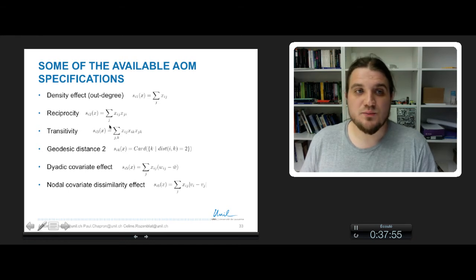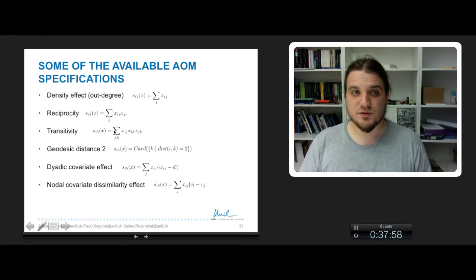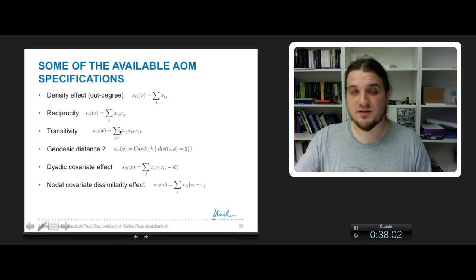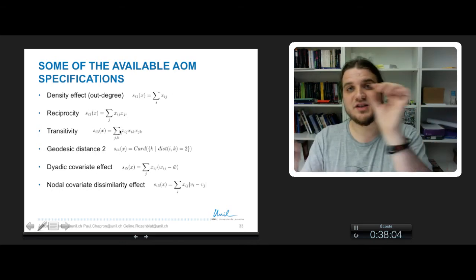Transitivity is pretty much the same thing with three nodes, so i, j, k, and this is positive when there is a transitive link, so i is connected to j and j is connected to k.